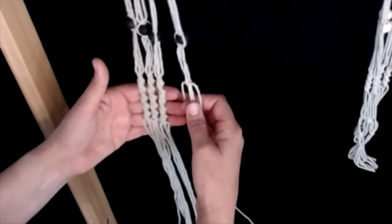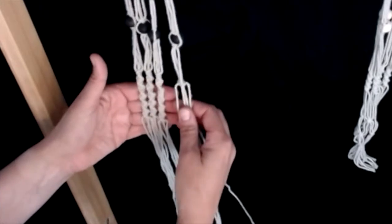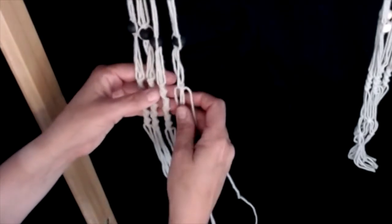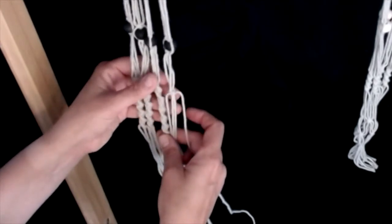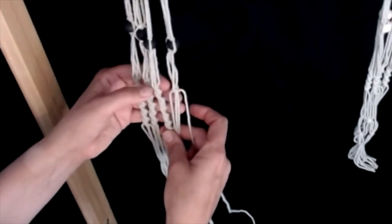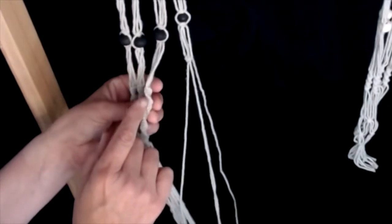We're going to do 30 spiral knots on all 4 groups. So our spiral knots will be counted per knot. We are going to do 30 spiral knots. You can check how many you have by counting the loops on the side.